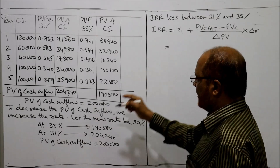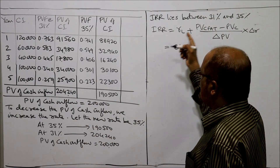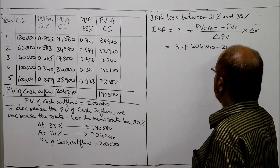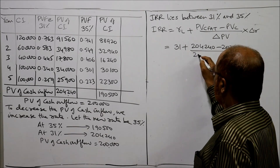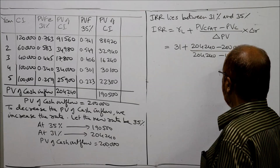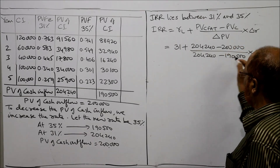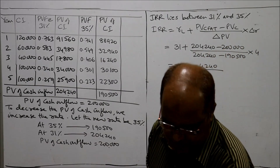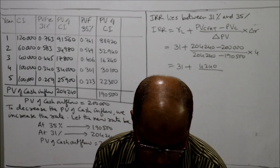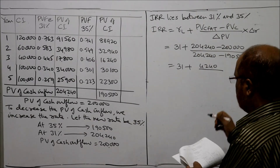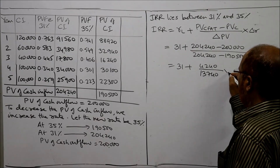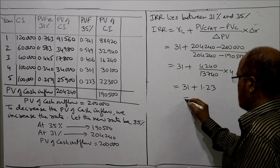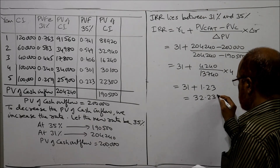Here RL is the lower rate, which is 31%. So: 31 plus (PV of cash inflow at lower rate, two lakh four thousand two hundred forty, minus two lakh) divided by (two lakh four thousand two hundred forty minus one lakh ninety thousand five hundred) into 4. That equals 31 plus four thousand two hundred forty divided by thirteen thousand seven hundred forty, into 4.